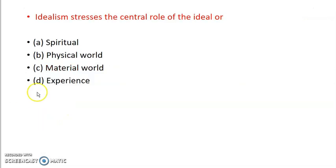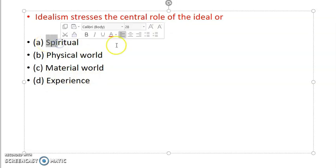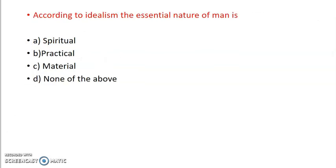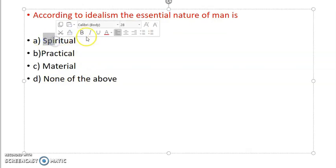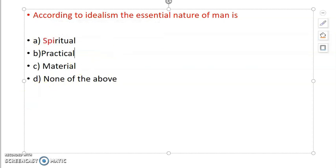So the next question is: Idealism states the central law of the ideal is spiritual, physical world, material world, or experience? The answer is spiritual. According to idealism, the essential nature of man is spiritual, practical, material, or none of the above. Essential nature should be spiritual. They believed a person should be a good person who has spirituality, remains with ideals. This is what idealism means.